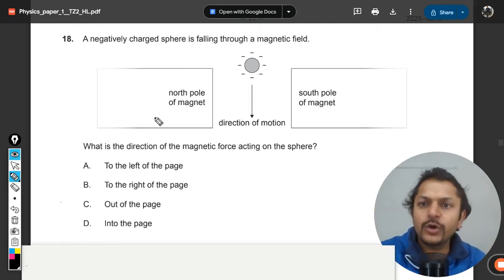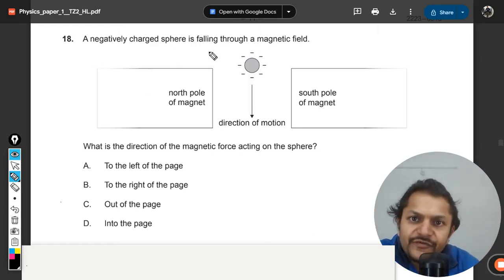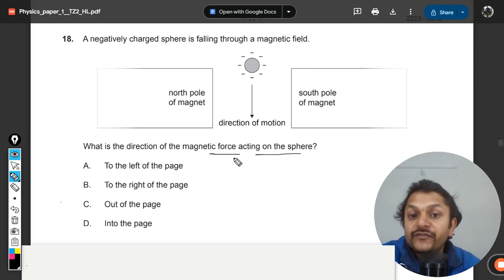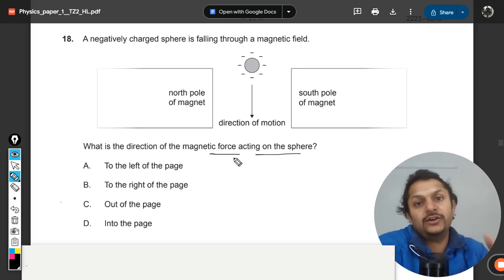Okay, let's see what is there in this question. A negatively charged sphere is falling through a magnetic field. What is the direction of magnetic force acting on the sphere?